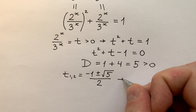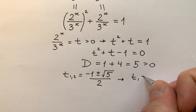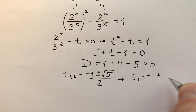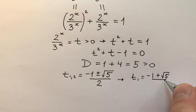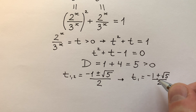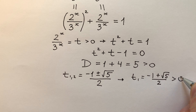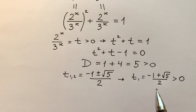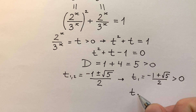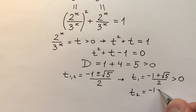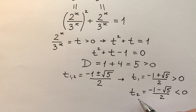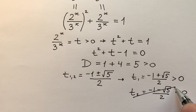We have two cases. The first t equals minus 1 plus square root of 5, divided by 2. It is positive, which is very good — it suits us. But the second t equals minus 1 minus square root of 5, divided by 2, and it is less than 0. So this is not our solution.